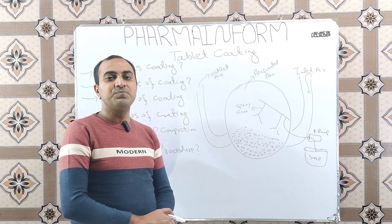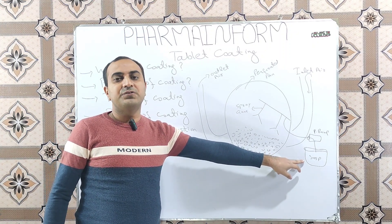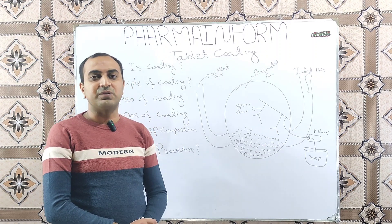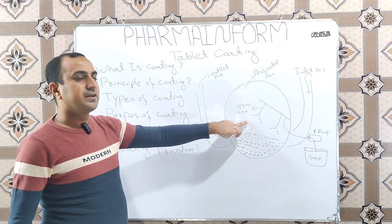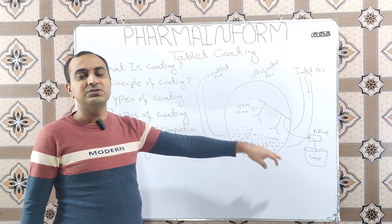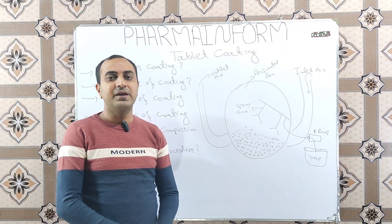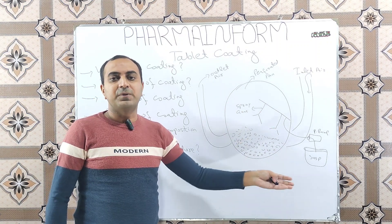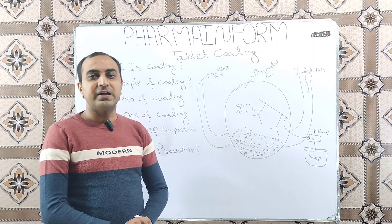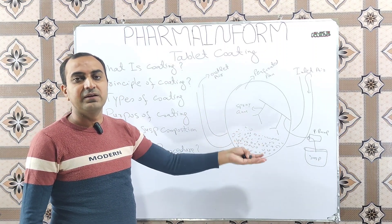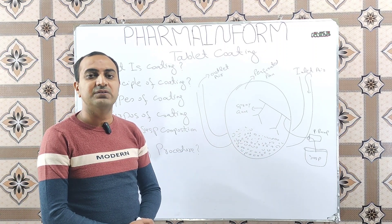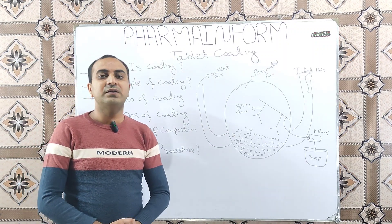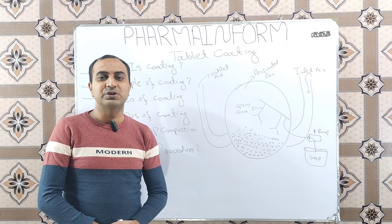This process continues until all the suspension is consumed and the desired tablet coating weight gain is achieved. Before starting the coating process, we check the weight of the core tablets. After applying all the suspension, we again check the tablet weight to measure how much weight gain has been achieved. This was all about the tablet coating process.